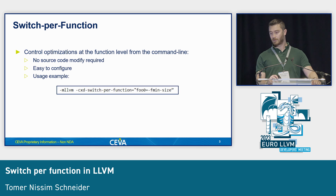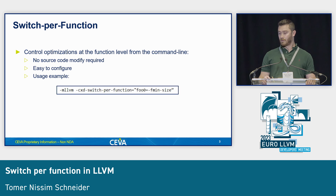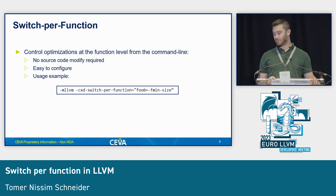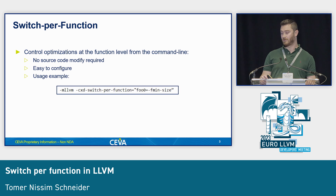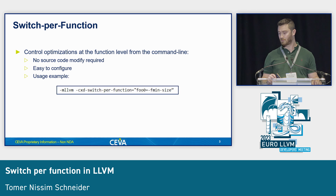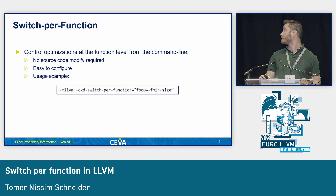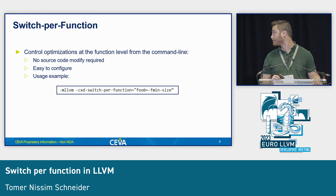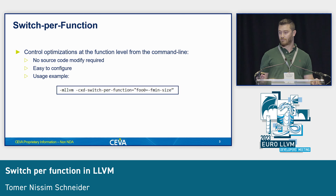The solution we are suggesting is to add control of optimization at the function level via the command line. This allows no source code modification, and it's much easier for the user to configure what they want. The example of how to do it is simply to add a switch that specifies the function you want to modify and the switch you would normally use at the file level.